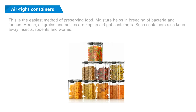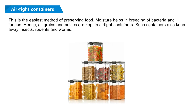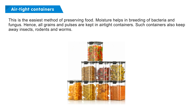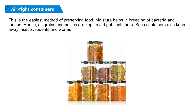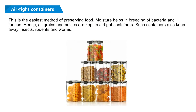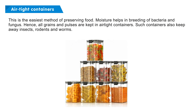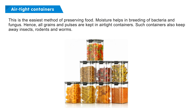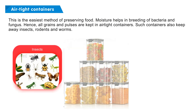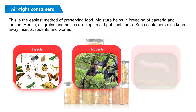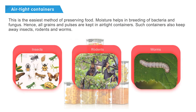Airtight Containers: This is the easiest method of preserving food. Moisture helps in the breeding of bacteria and fungus. Hence, all grains and pulses are kept in airtight containers. Such containers also keep away insects, rodents, and worms.